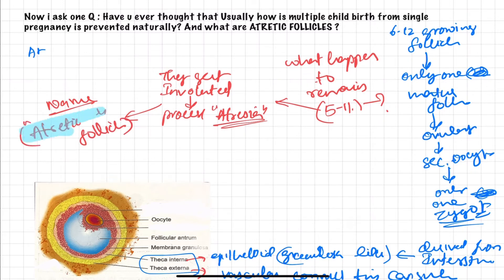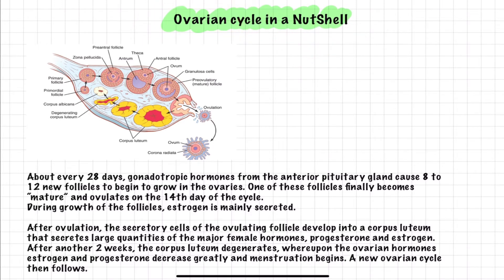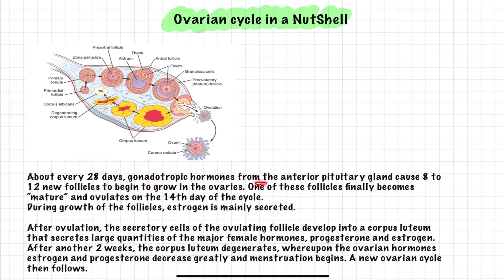Now let us learn the ovarian cycle in a nutshell, because the ovarian cycle is very important and the basics are essential to understand. About every 28 days, gonadotropic hormones — LH and FSH — from the anterior pituitary gland cause 8 to 12 new follicles to begin growing in the ovaries, and only one of these follicles finally becomes mature and ovulates on the 14th day of the cycle.